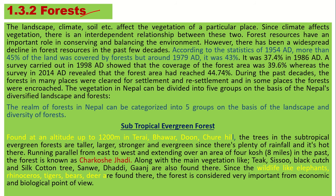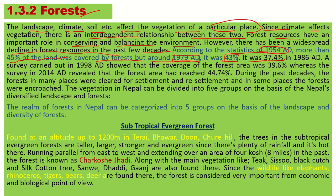Now we will move to the next topic: forest. Landscape, climate, and soil affect the vegetation of a particular place, and since climate affects vegetation, there is an interdependent relationship between the two. Forest resources have an important role in conserving and balancing the environment. However, there has been a widespread decline in forest resources in the past few decades. In 1954 AD, more than 45% of land was covered in forest, but around 1979 AD it was only 43%. It was 37.4% in 1986, and a survey in 1998 AD showed forest coverage at 39.6%.